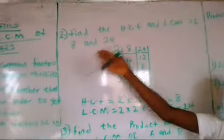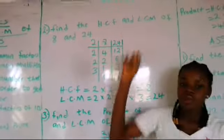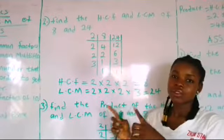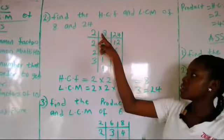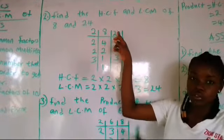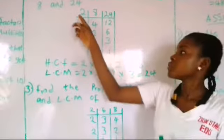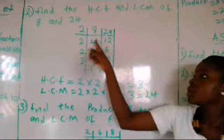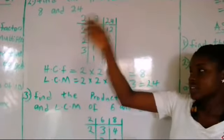Now let's move forward. Our second example is finding the HCF and LCM of 8 and 24. This is a very easy method of getting both of them at once. You rule your lines and put 8 on top and 24. Then you start from the smallest number possible — I am using 2. So 8 divided by 2 will give you 4, and 24 divided by 2 will give you 12. So we are left at that first stage.